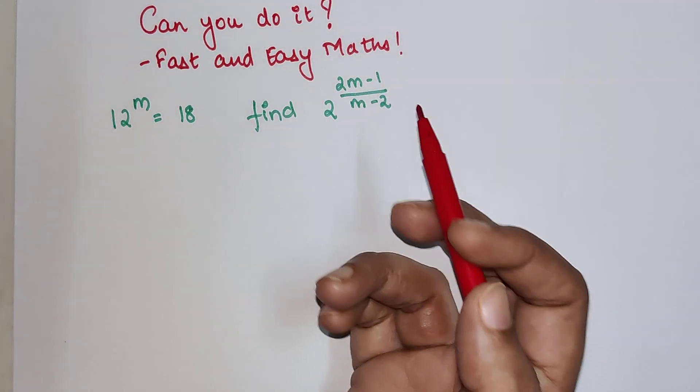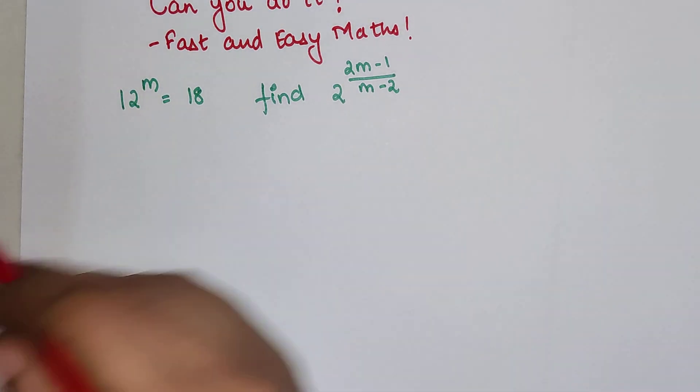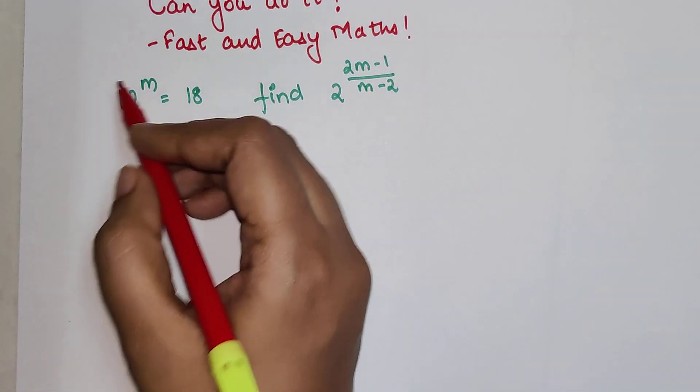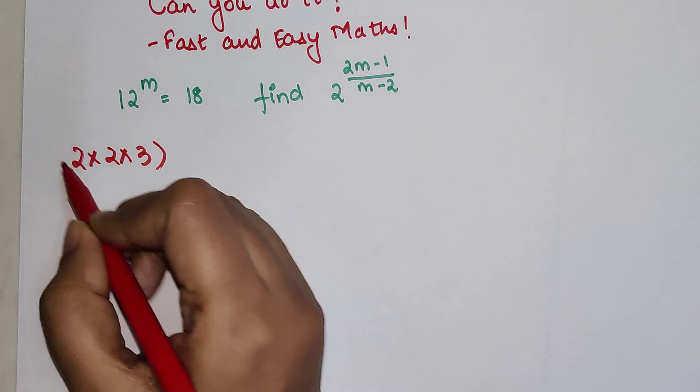But going from 12 up to 2 might be easy. Let's give it a try. This can be written as, let's write everything in terms of 2's. So this is nothing but 2×2×3, the whole raised to m.